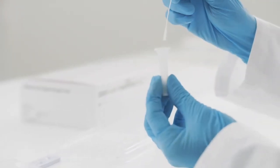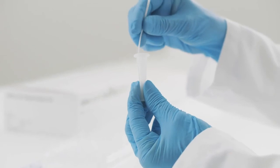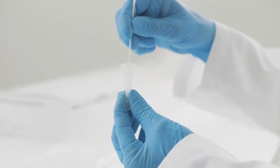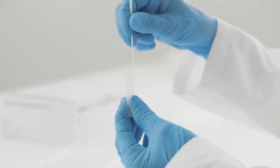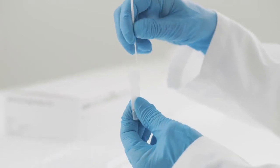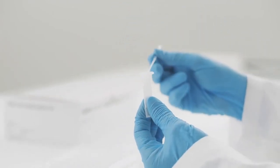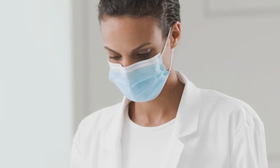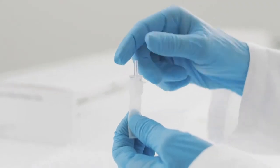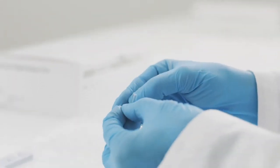You can then place the swab into an extraction buffer tube. While squeezing the buffer tube, stir the swab at least five times. Remove the swab while squeezing the sides of the tube to extract the liquid from the swab. Now press the nozzle cap tightly onto the tube. You are ready to perform your test.